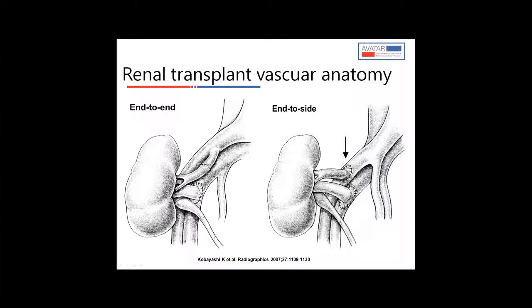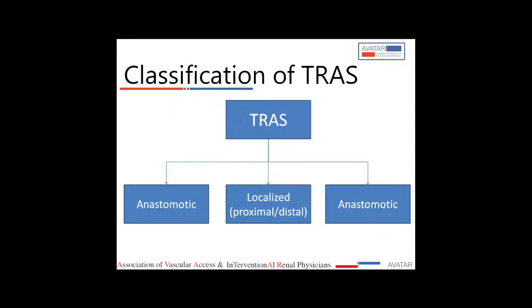The type of anastomosis matters when you treat transplant renal artery stenosis. If an end-to-end anastomosis has been created and the renal artery becomes stenosed, you have to approach this artery through percutaneous methods by puncturing the contralateral femoral artery. Whereas if it is an end-to-side anastomosis, you can approach the transplant renal artery by puncturing the ipsilateral femoral artery.